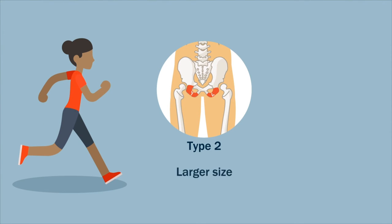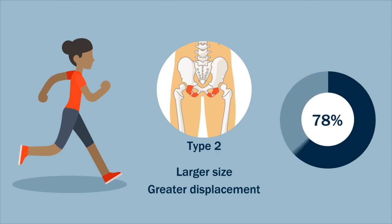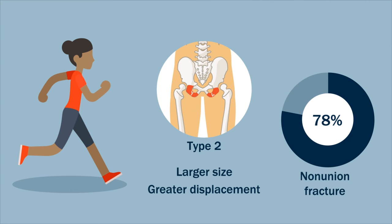In contrast, type 2 complete fractures were larger in size, more likely to have greater displacement, and a 78% chance of progressing to a nonunion.